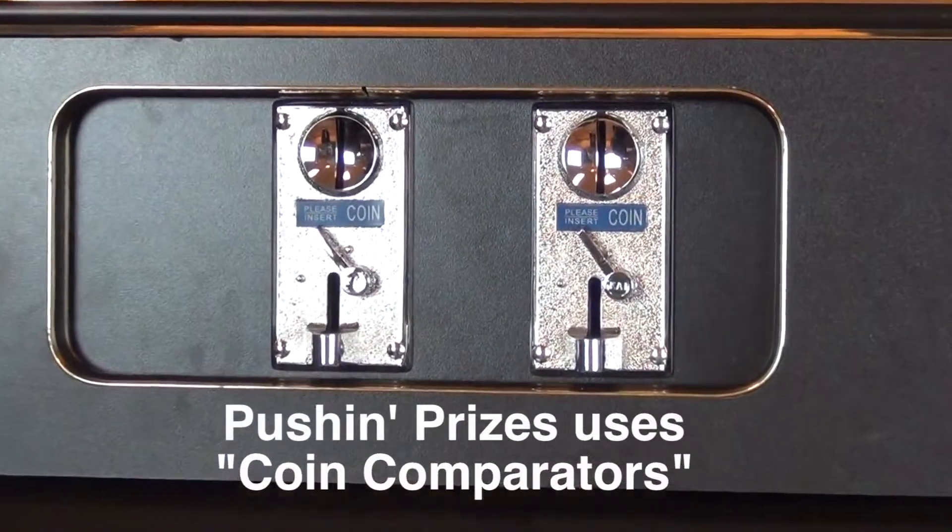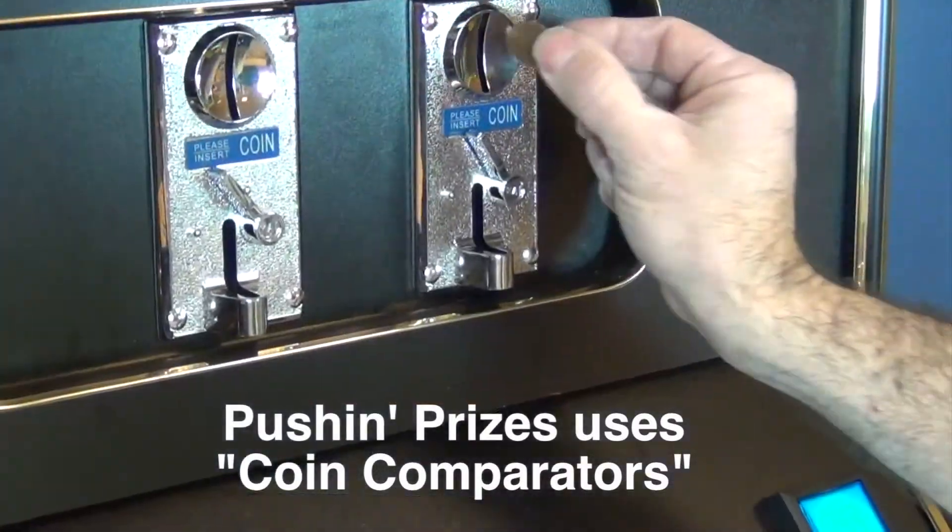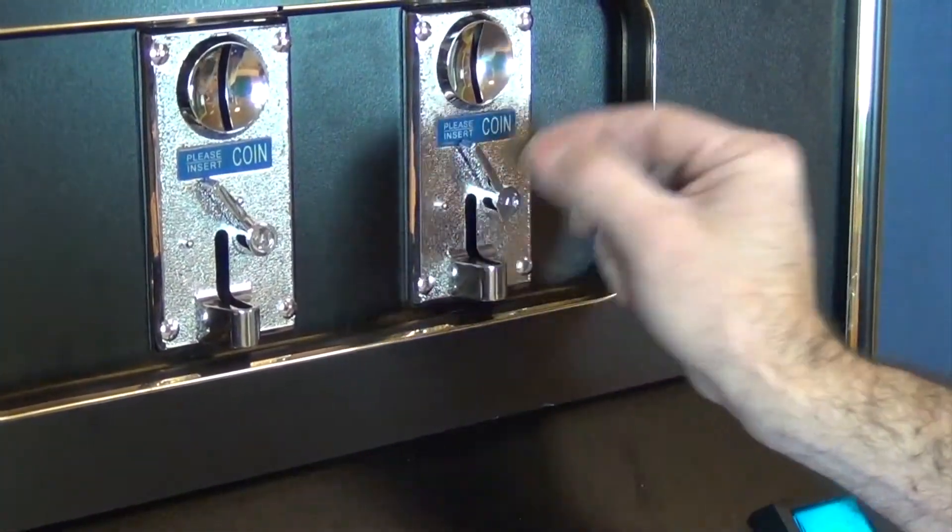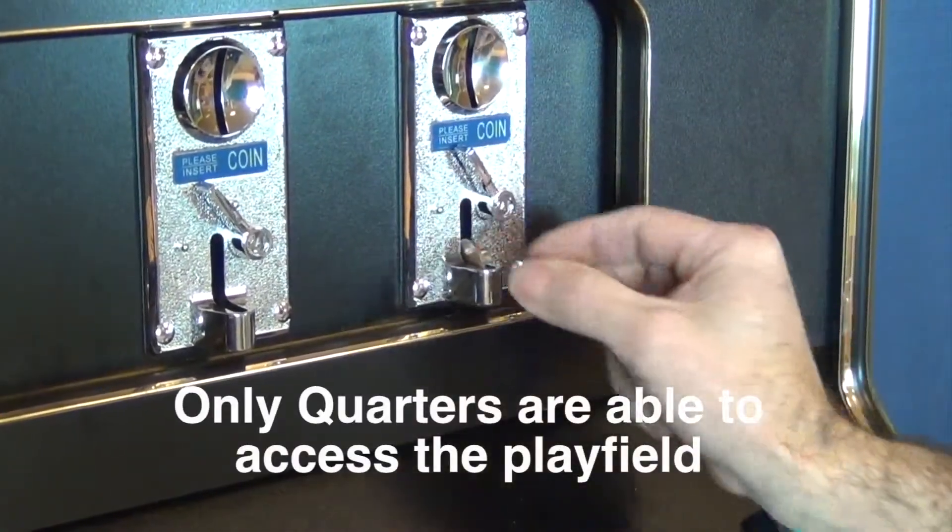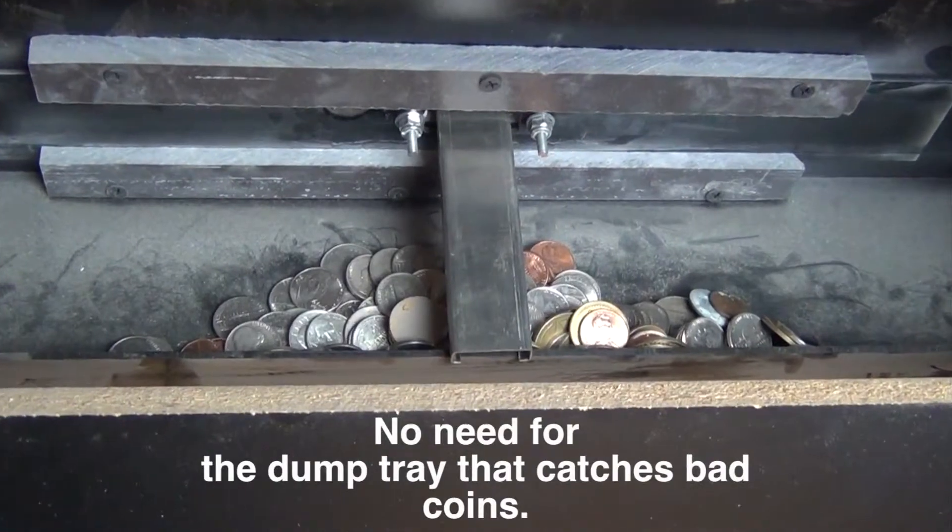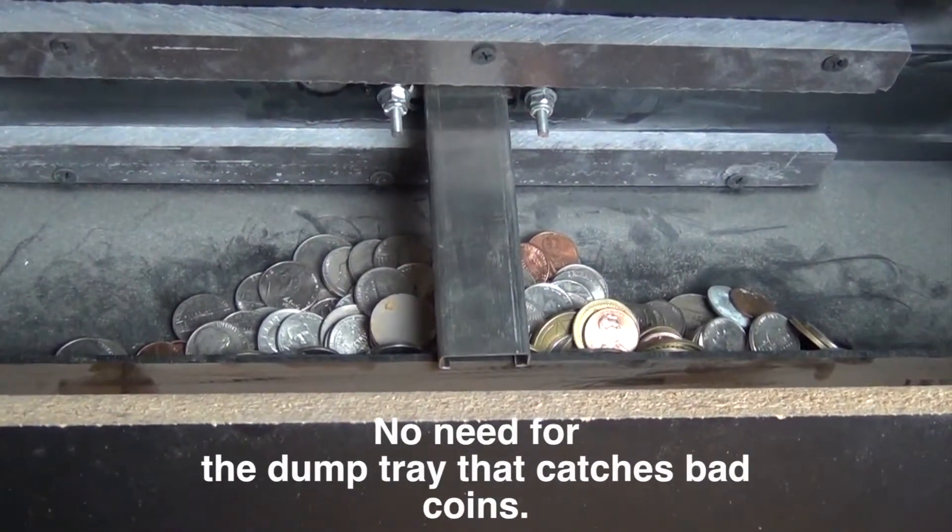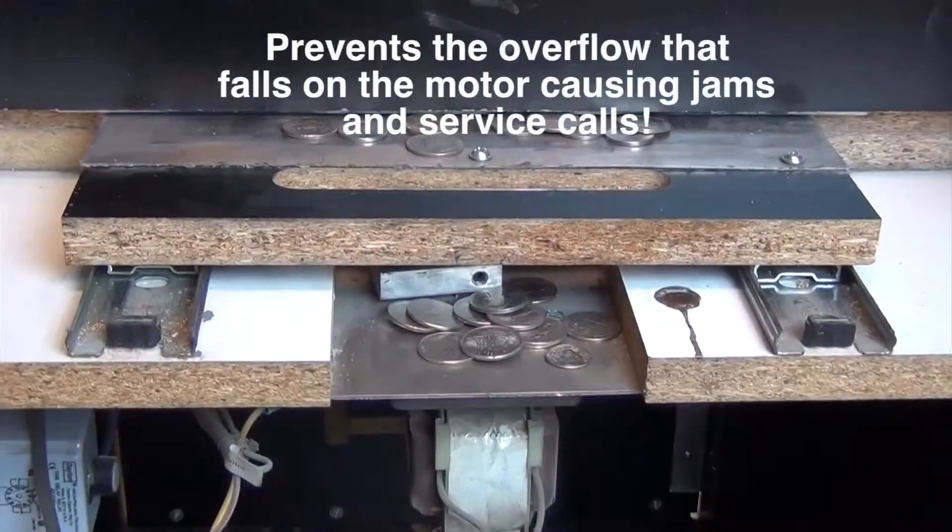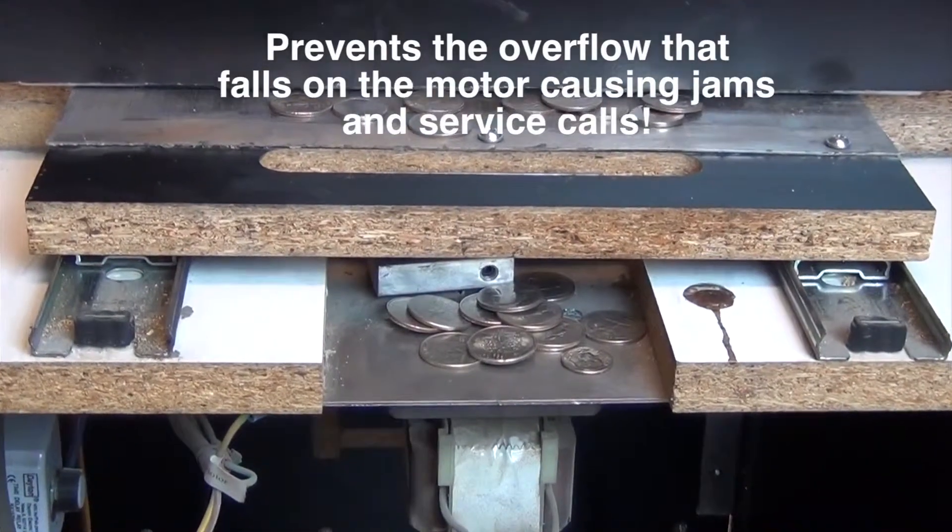To alleviate many coin-in problems, Push-in Prizes uses coin comparators. These reject anything but quarters, preventing the penny slide and just as important, eliminating the dump tray, which can overflow, jam the motor, and create service nightmares.